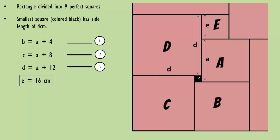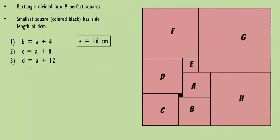Now let's make some more equations. F is equal to D plus E. Substituting the values gives us the equation F equals A plus 28. G is equal to F plus E, so we get G equals A plus 44. H is equal to A plus B, and that's equal to 2A plus 4.